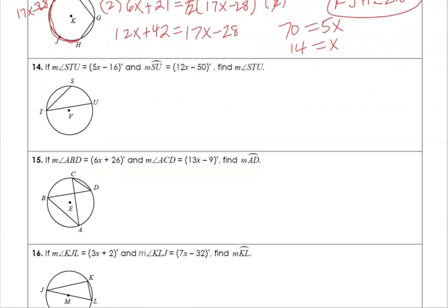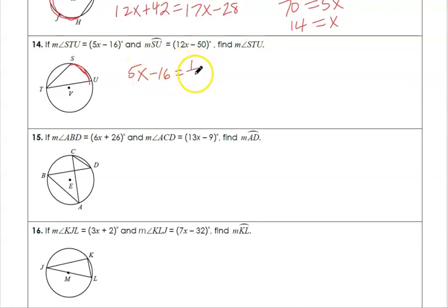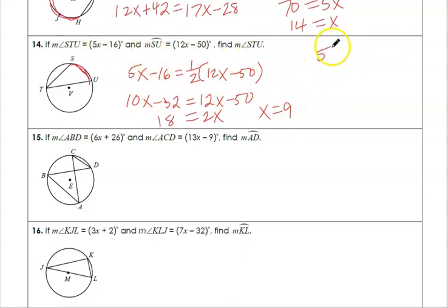In number 14, angle STU is 5X minus 16 and arc SU is 12X minus 50. The angle is one half of the arc, so we multiply both sides by 2. Adding 10X and 50, then dividing by 2, gives X equals 9. Plugging in: 5 times 9 minus 16 equals 45 minus 16, which is 29 degrees for angle STU.